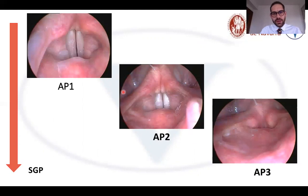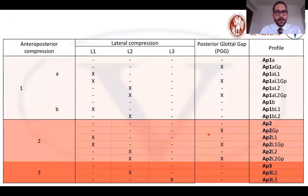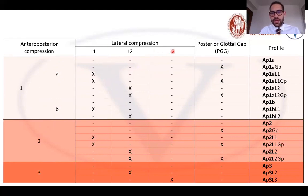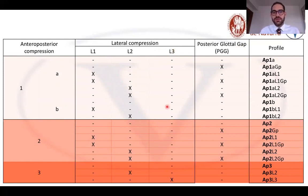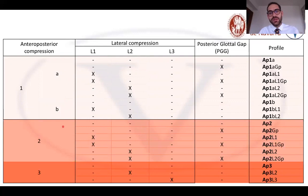With this information, we propose a three-grade classification: AP1, AP2, and AP3. AP1 will be related to a lower subglottic pressure value than AP2 and AP3. To provide more information about what is happening in the larynx during phonation, the different grades of anterior-posterior compression — which indicate severity — can be accompanied by additional letters: L1, L2, or L3 if lateral compression is also present, or PGG if posterior glottal gap is also present. This creates a combined formula giving more complete information about laryngeal function during phonation.